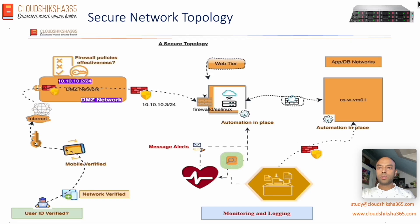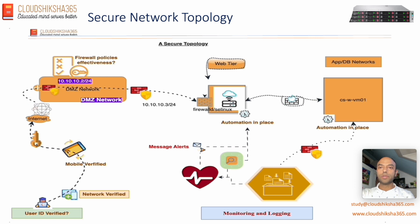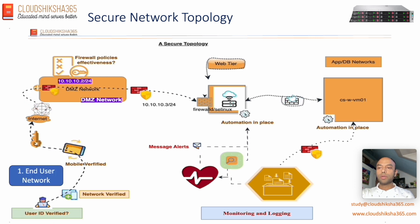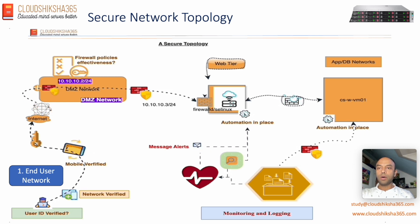When we talk about a secure network topology, it broadly covers four important sections of any network. The first portion is what we call the end user network — it is very important to consider how we are tracking the end user.